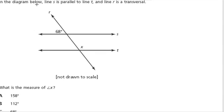In the diagram below, line s is parallel to line t, and line r is a transversal. So here's line r, that's the transversal cutting across our two parallel lines s and t. What is the measure of angle x?